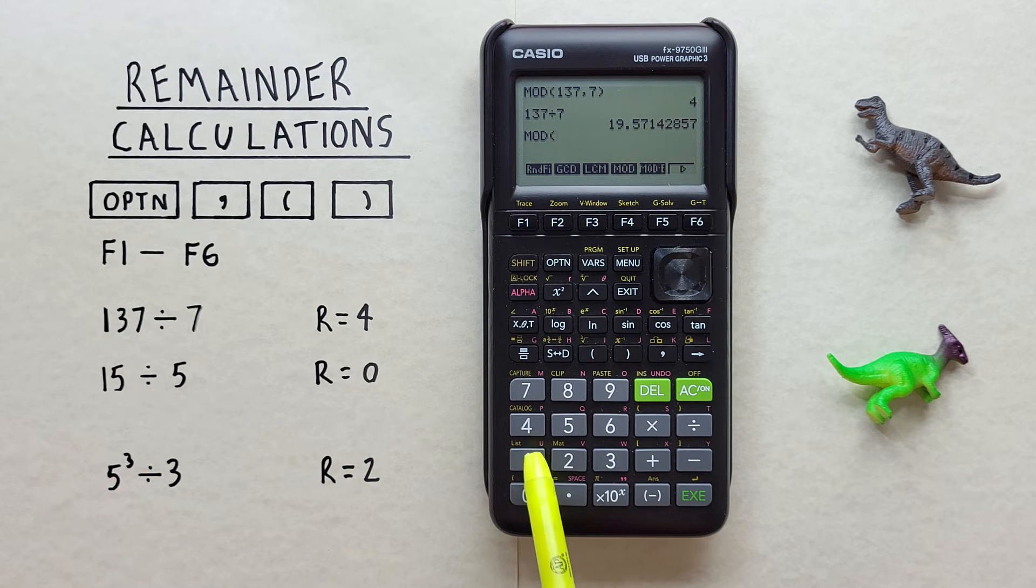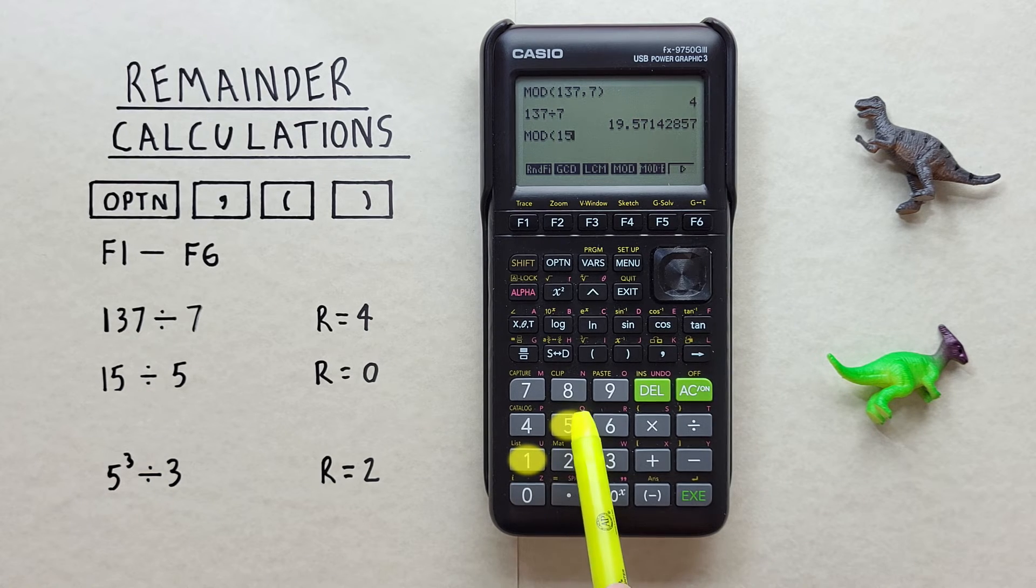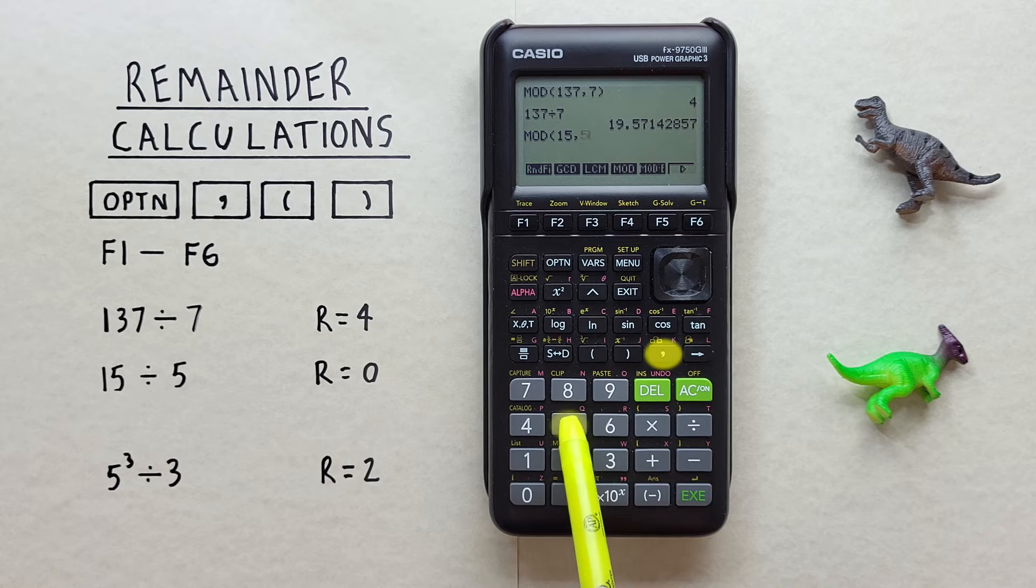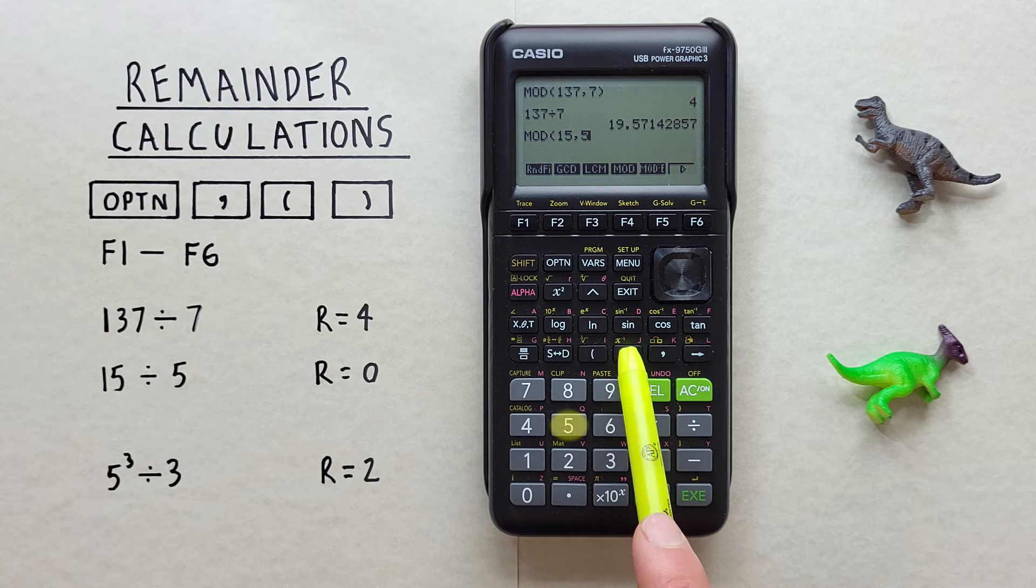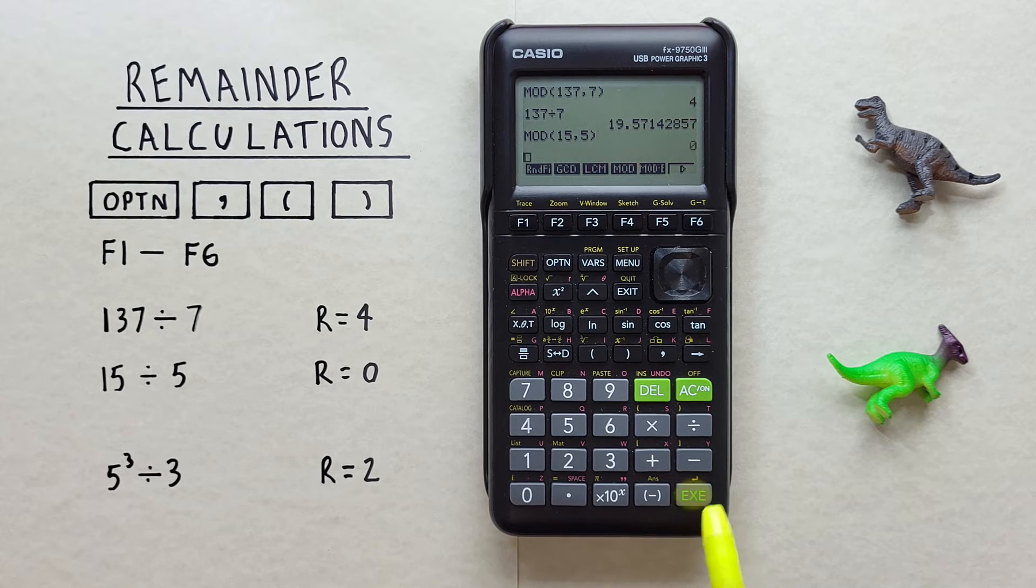Enter our first number, which was 15, comma, 5, close our bracket, and hit exe.